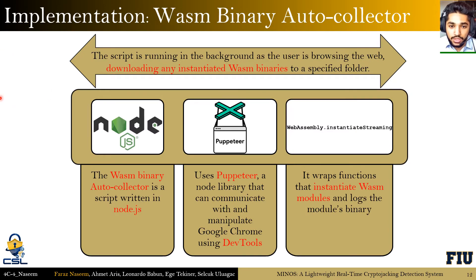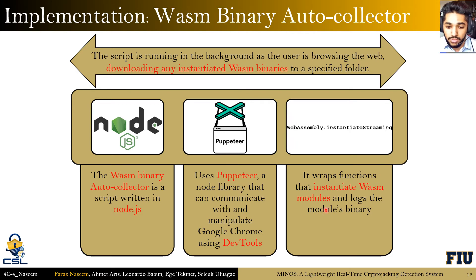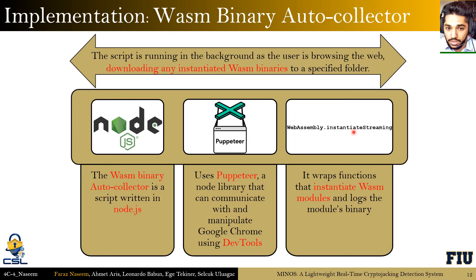The first component, the WebAssembly binary auto-collector, is a script written in Node.js that uses the Puppeteer library to communicate with Google Chrome over the DevTools protocol. The script wraps functions that instantiate WebAssembly modules and downloads the module's binary. In particular, the function we are concerned with is WebAssembly.instantiateStreaming, as shown here. The script runs in the background while the user browses the web, downloading any instantiated WebAssembly binaries to a specified folder.